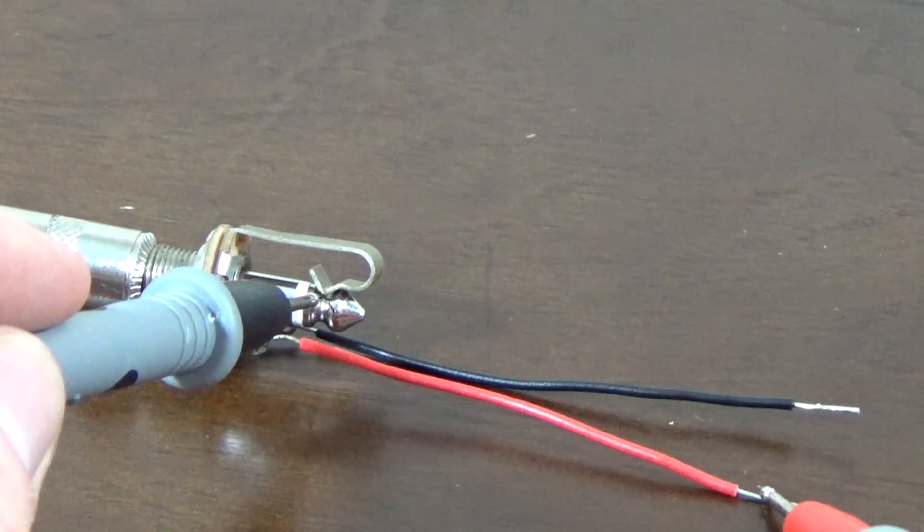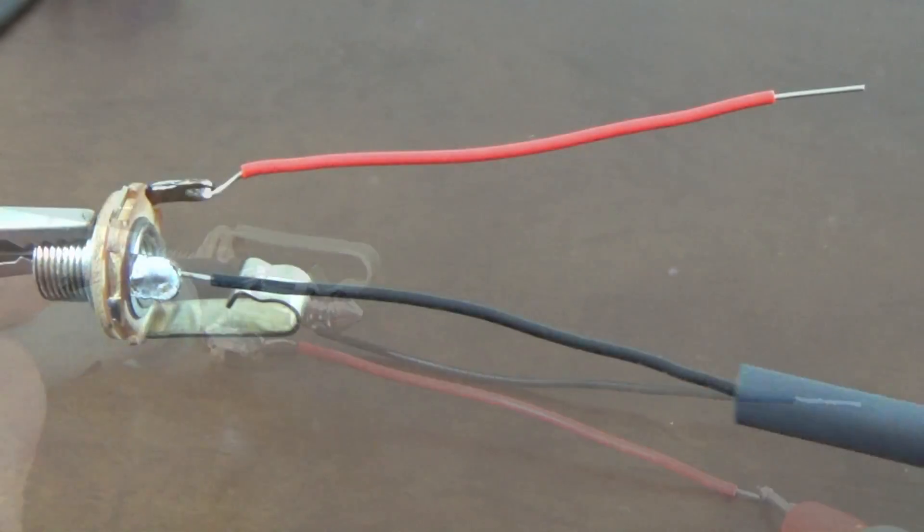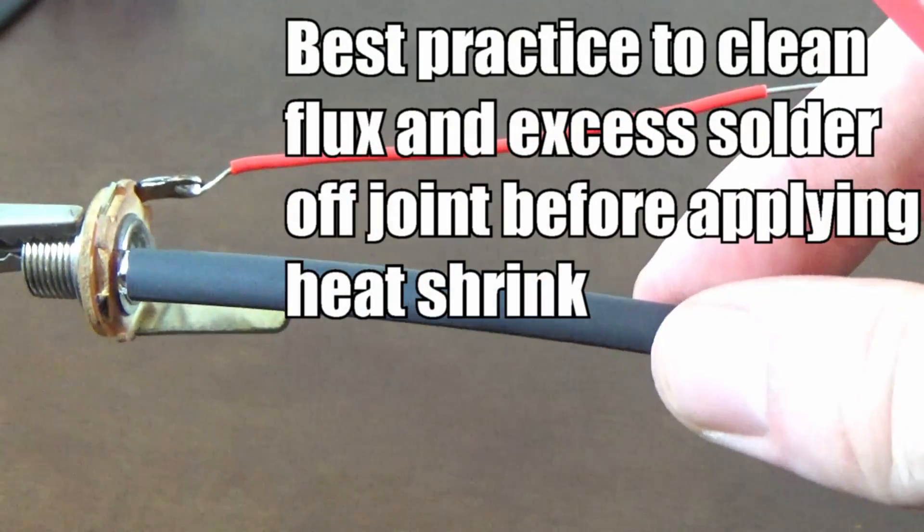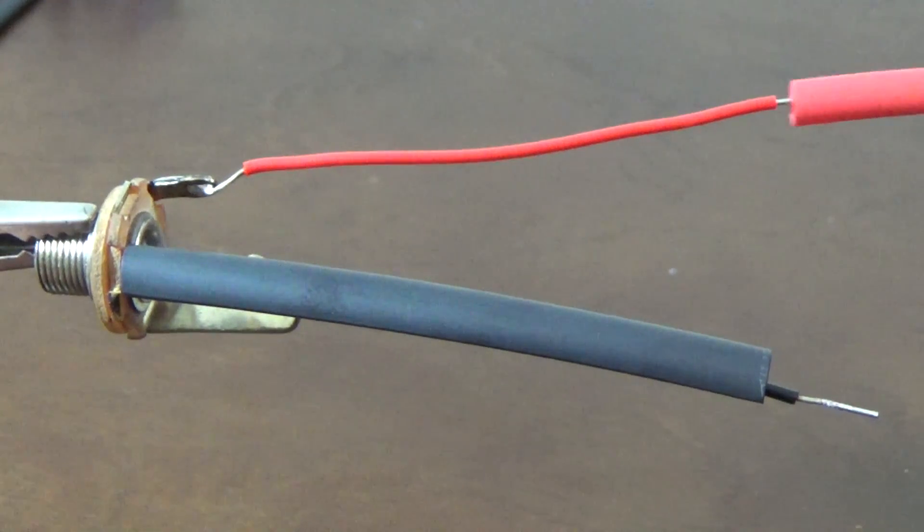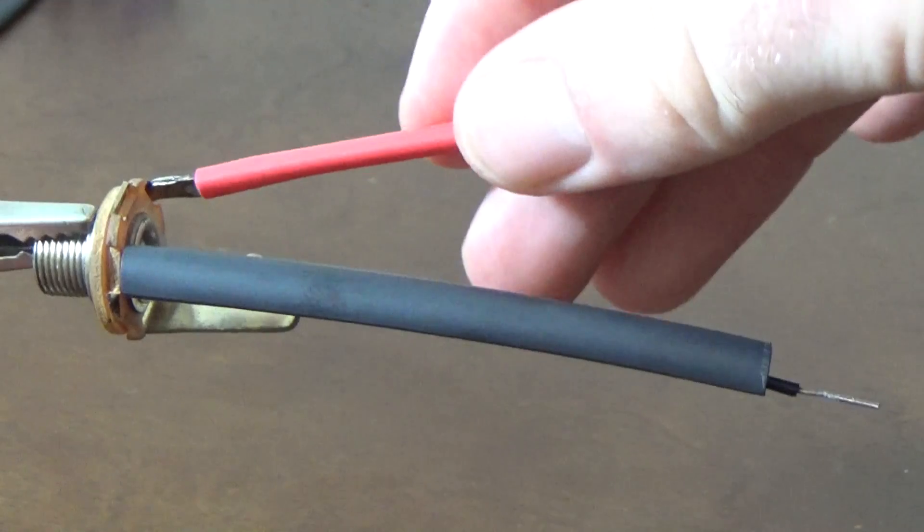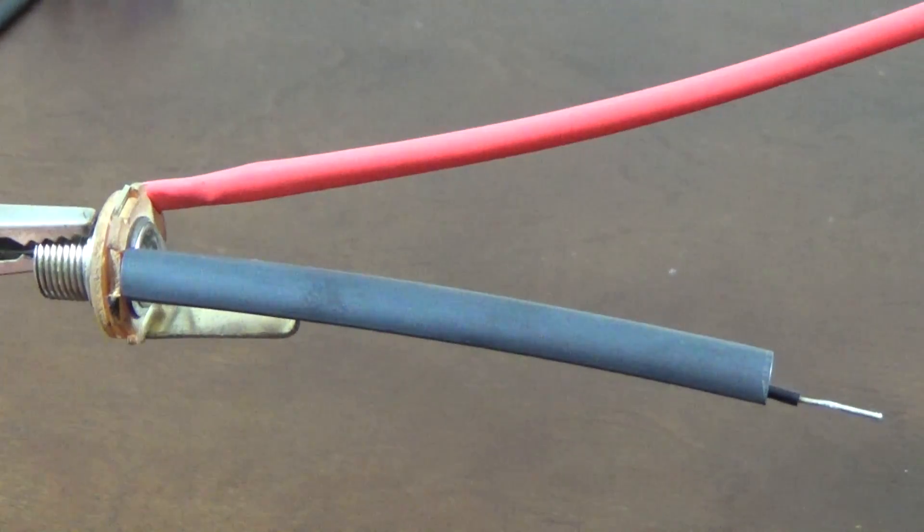One optional step is to use heat shrink. This will have a more professional look and protect your joint from the elements. Like the wire, I go ahead and gauge how much to cut based off the connector itself.